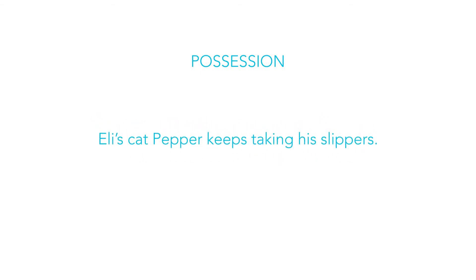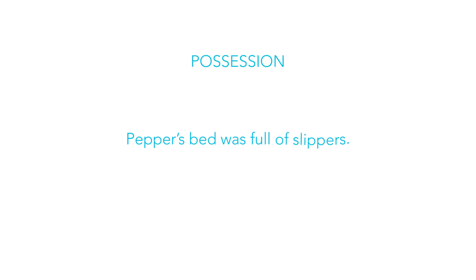The other time we use apostrophes is for possession. When we are talking about something that belongs to someone else, we use an apostrophe to show possession. For example, 'Eli's cat Pepper keeps taking his slippers.' The cat belongs to Eli, so we put an apostrophe after his name to show possession. Here's another example: 'Pepper's bed was full of slippers.'